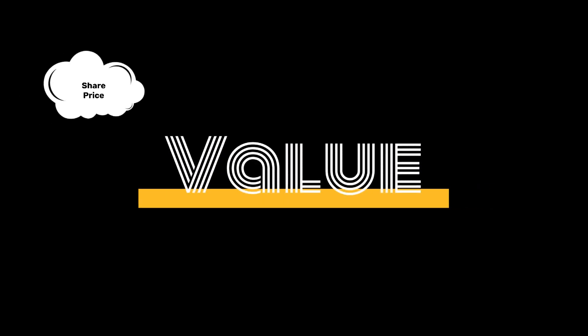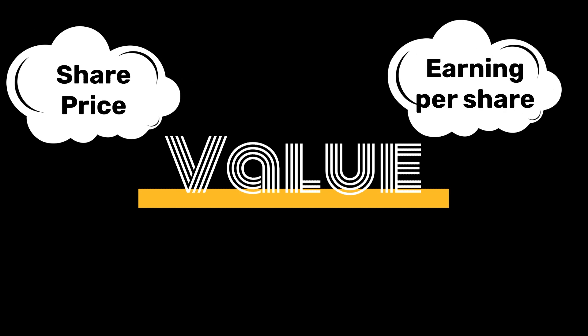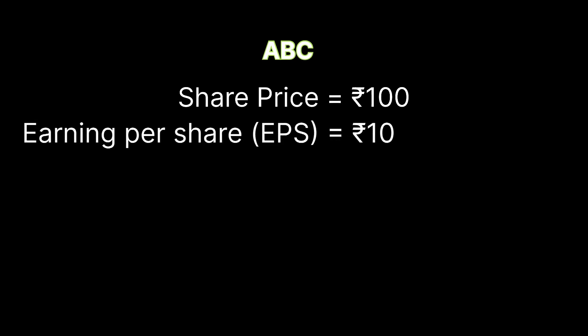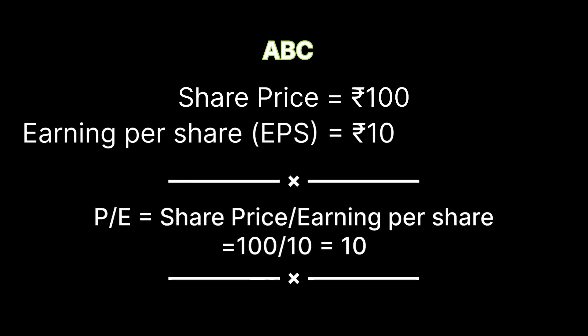To know the value of a company we need to compare its share price to its earnings per share. To understand this, let's take an example of a company called ABC. Let's say its share price is rupees 100 and the earnings from each share is rupees 10. We can calculate the PE ratio by dividing share price by its earnings per share. In this example, the PE ratio of ABC company is 10.